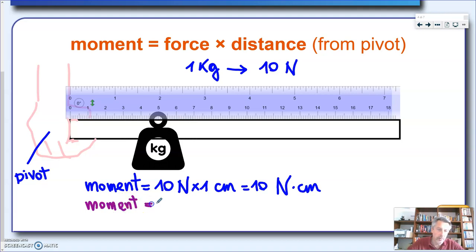Moment equals to 10 newtons. This hasn't changed. What has changed? It has changed the distance. Now it's 5 centimeters. So times 5 makes 50. So the new moment is 50 newtons per centimeters.